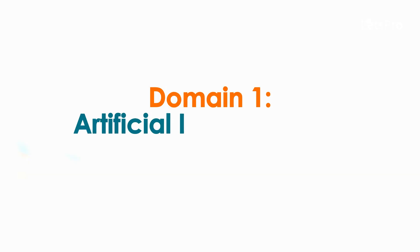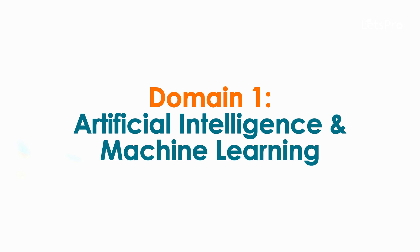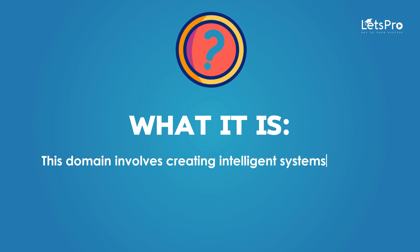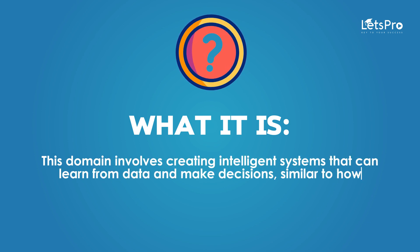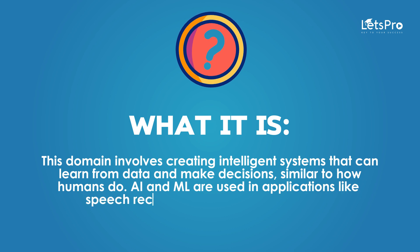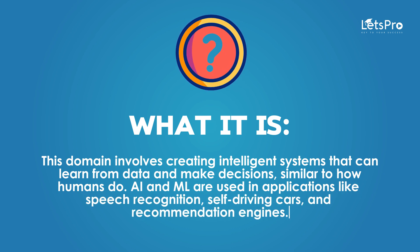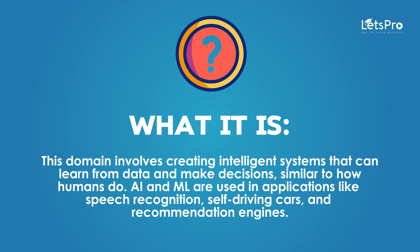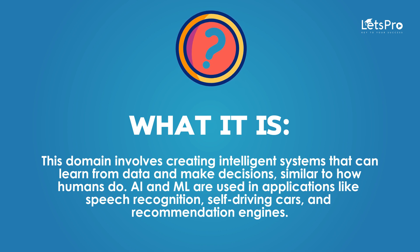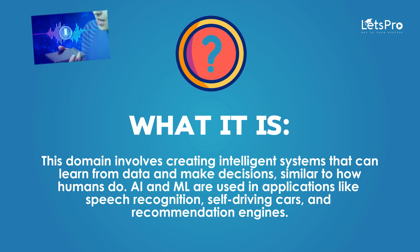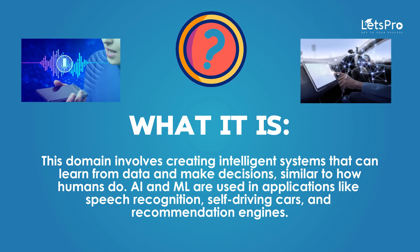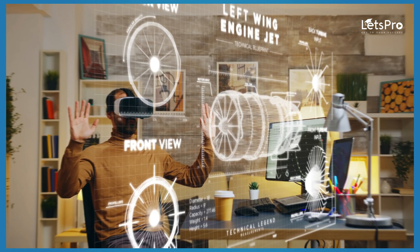Domain 1: Artificial Intelligence and Machine Learning. This domain involves creating intelligent systems that can learn from data and make decisions, similar to how humans do. AI and ML are used in applications like speech recognition, self-driving cars, and recommendation engines.